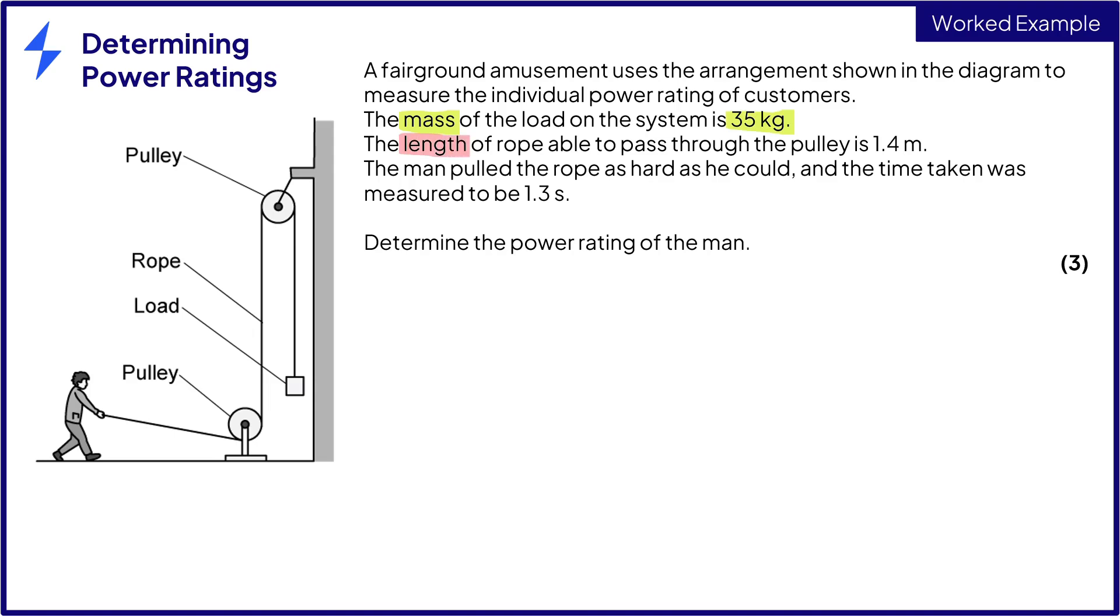The length of the rope able to pass through the pulley is 1.4 meters. The man pulled the rope as hard as he could and the time taken was measured to be 1.3 seconds. Determine the power rating of the man for three marks.